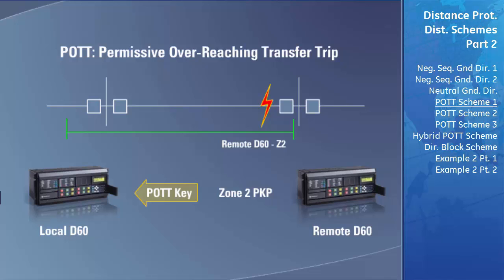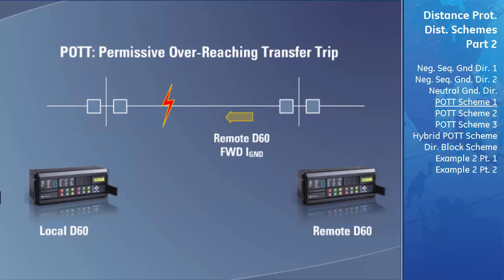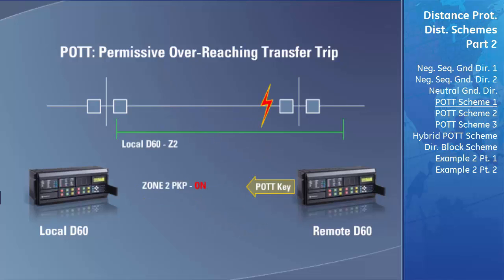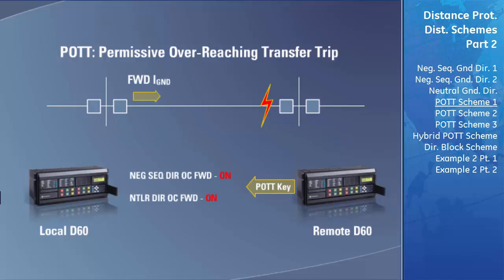The expression 'overreaching' comes from the term permissive overreaching transfer trip. Either the forward negative sequence directional overcurrent element or the forward neutral directional overcurrent element will send a POTT key to the local relay, as well as when the overreaching zone 2 pickup flag turns on. The local D60 POTT logic will only cause the breaker to trip if it receives the POTT key and the local relay has detected a fault within its zone 2 area of protection, or detects ground current flowing in its forward direction if this function is enabled.